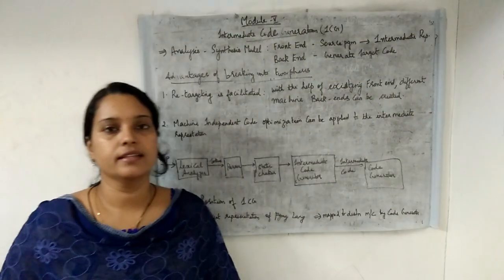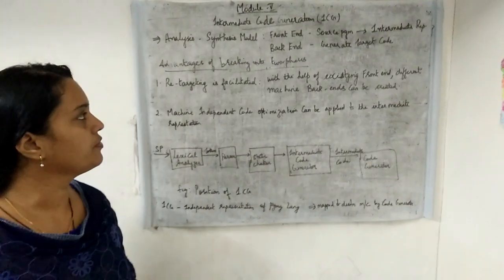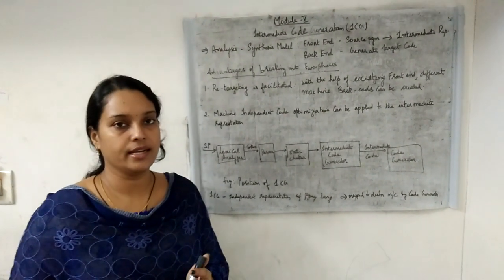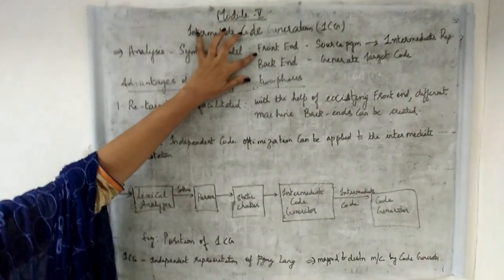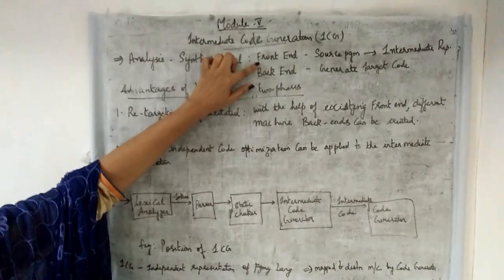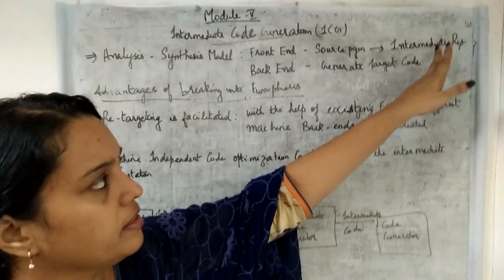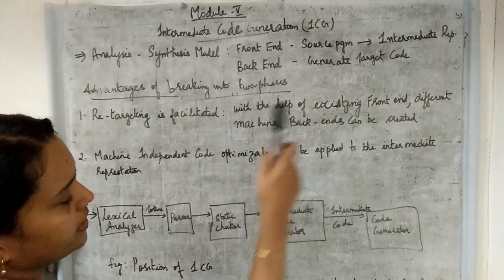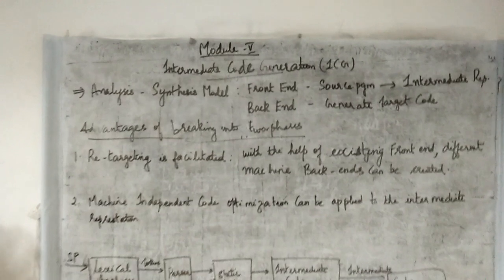In this class we are going to discuss the next phase of the compiler, which is intermediate code generation. The phases of the compiler are divided into two: frontend and backend, or the analysis phase and the synthesis phase. The frontend covers phases from the source program to intermediate code generation, while the backend comprises machine-independent code optimization and generation of target code.